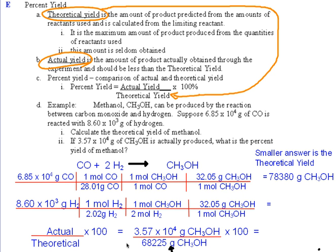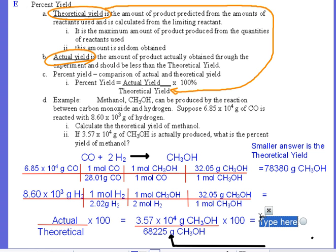So I'm going to take the 35,700 grams that was actually produced. Look at that language here. The CH3OH is produced. Compared to that, what should have happened, I'm going to get a percentage, and that percentage is 52%.